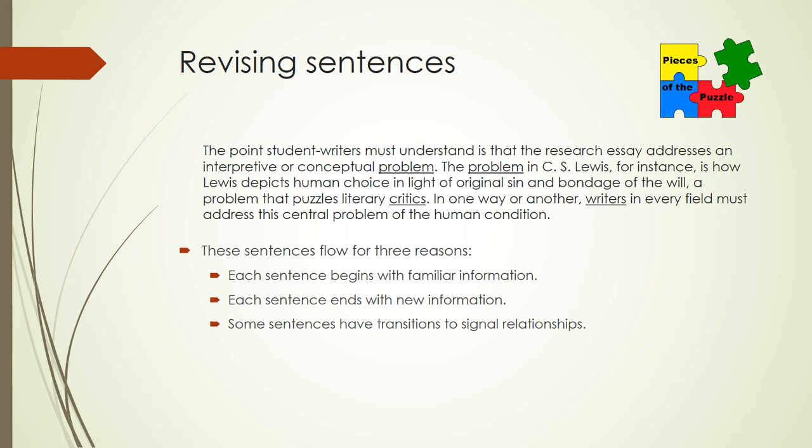Second, each sentence ends with new information that writers cannot predict. New information keeps the sentences advancing and interesting and readers interested. Third, some sentences have transitions to signal relationships, such as narrowing focus — like 'for instance' — and generalizing expansion — like 'in one way or another.'